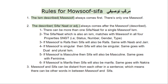The second rule — very important — is that sifah or na'at, which is also an ism, matches with masuf in all four properties. Those properties are: status, number, gender, and type. If masuf is rafa, then sifah will also be rafa. If masuf is nasab, then sifah will also be nasab. If masuf is jar, then sifah will also be jar. So status is the same between masuf and sifah.